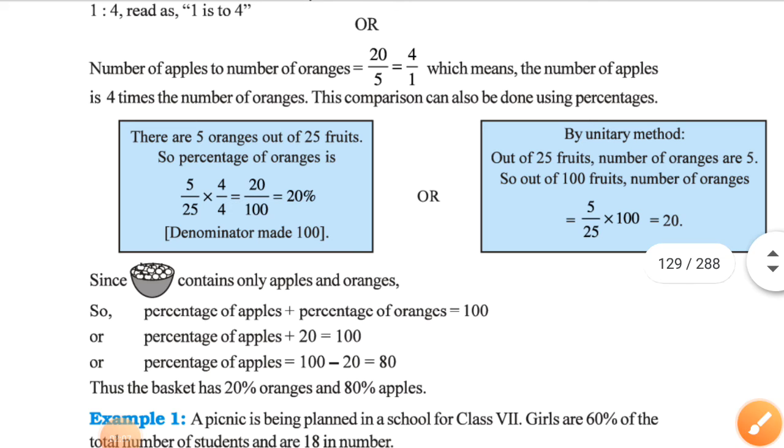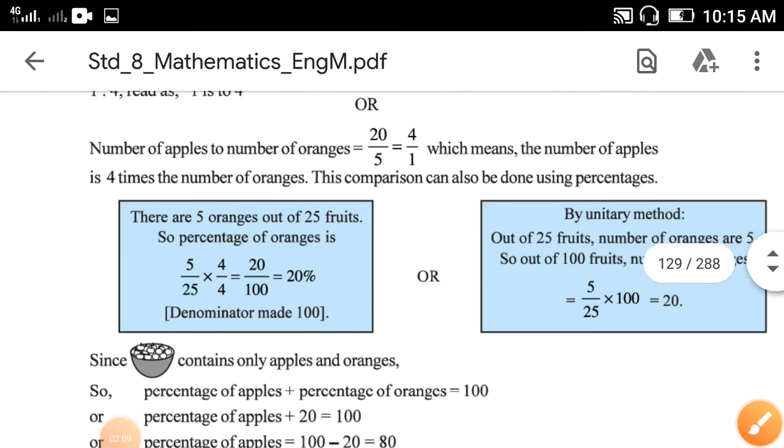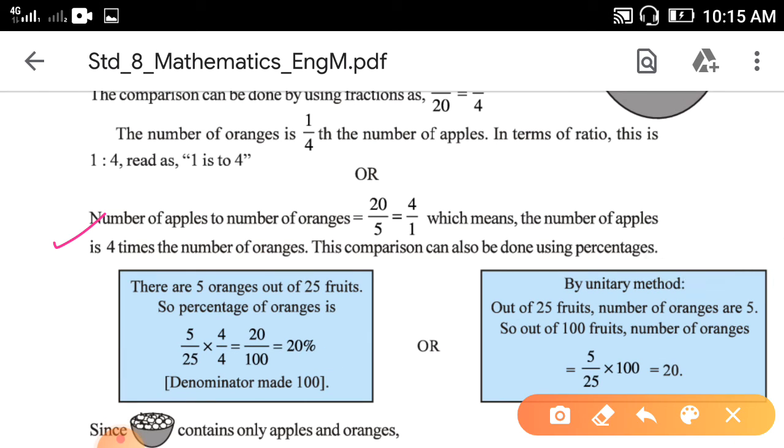First you write number of oranges in the numerator and number of apples in the denominator, then you will get 4 to 1, which means the number of apples is 4 times the number of oranges.